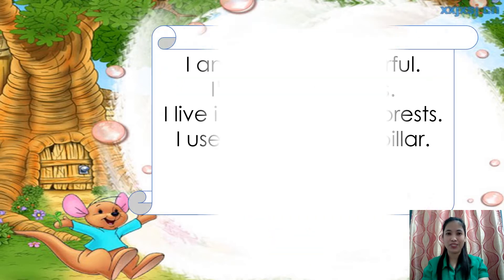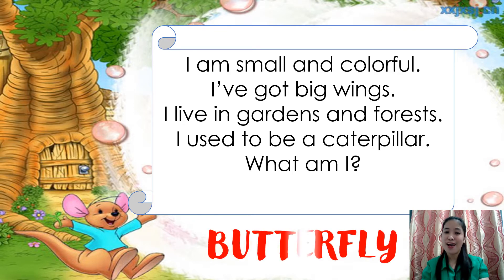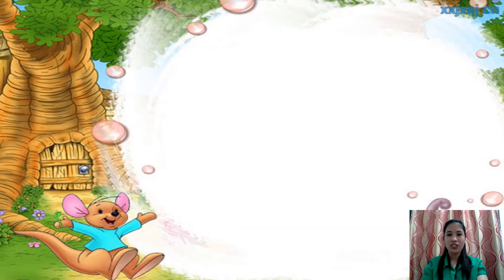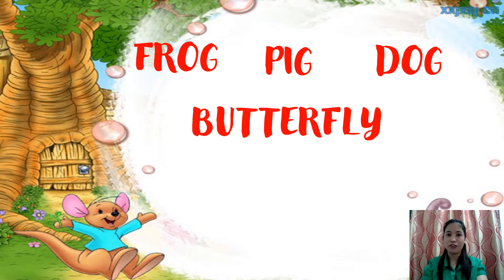Let's have the last one. I am small and colorful. I've got big wings. I live in gardens and forests and I used to be a caterpillar. What am I? That is a butterfly. The animals in the riddles are frog, pig, dog, and butterfly.